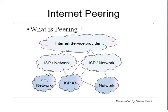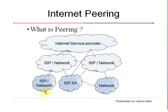Peering obviously uses eBGP protocol. On the internet there are lots of autonomous systems and networks connected with each other. A network can be dual-homed, meaning it is connected with multiple networks, or it could be single-homed, connected with only one other network. There are large service providers connected with smaller service providers, and at the end we have subscribers, residential, or business users connected to them.